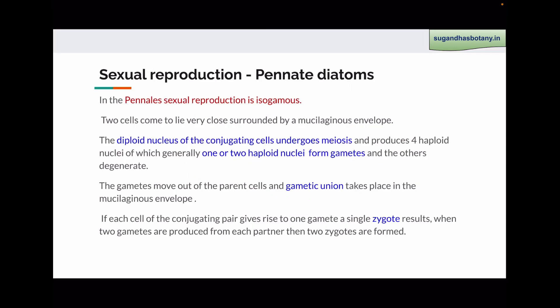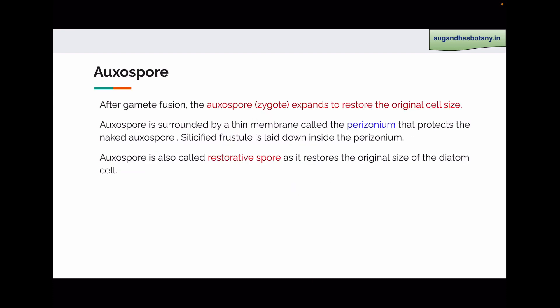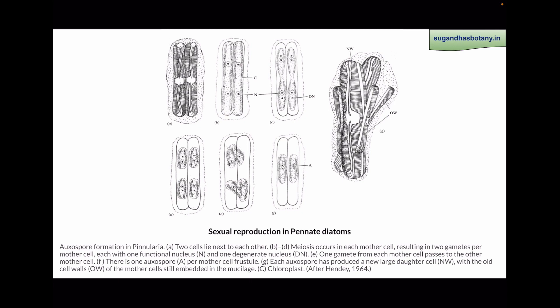In pinnate diatoms, sexual reproduction is isogamous. The two fusing cells come together and lie within a common mucilage. The nucleus in each cell divides by meiosis forming four nuclei. Out of these four nuclei, two nuclei degenerate and two remain functional. So in each cell, two amoeboid gametes are formed. One amoeboid gamete of one cell fuses with the amoeboid gamete of another cell, forming two diploid zygotes or auxospores. These auxospores enlarge in size. The older hypotheca and epitheca are removed. The zygote or auxospore is surrounded by a thin membrane known as perizonium. The auxospore then secretes its own new epitheca and hypotheca, thereby restoring the size of the cell.